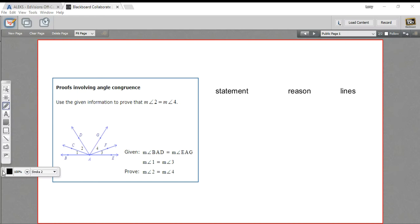In this problem we're being asked to construct a proof that has to do with angle congruence. We're given this figure with lots of angles in it here and some given information, and we're being asked to prove that the measure of angle 2 equals the measure of angle 4.